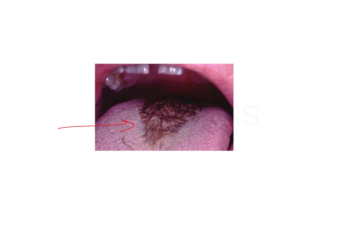Normally these filiform papillae are 1 mm in length, but in hairy tongue they can go up to 15 mm in length. Remember this numeric value.